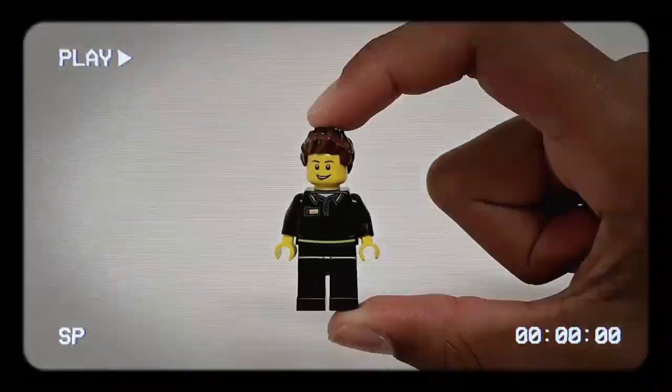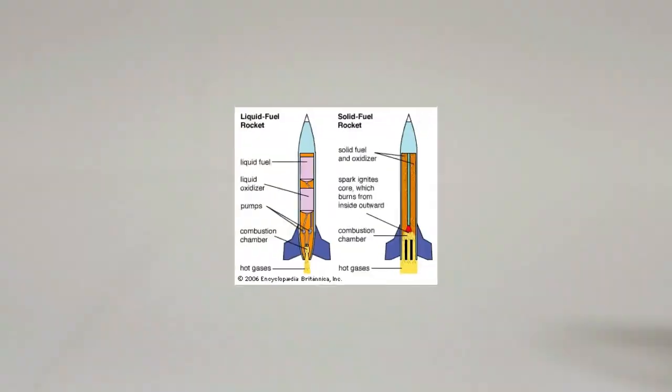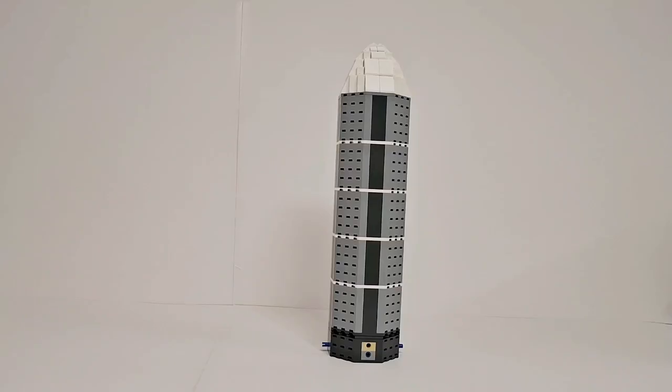But before we can do that, we first need to build a rocket ship and using this simple model, the rocket ship would be divided into three main parts: the base, the body, and the cone.